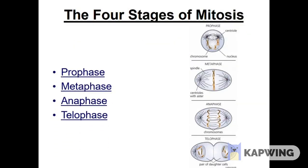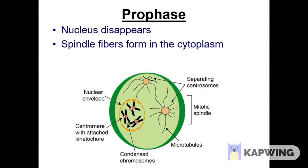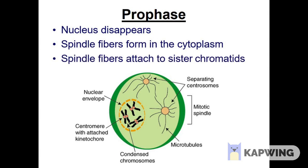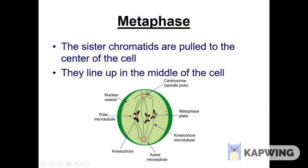Mitosis is majorly divided into four phases: prophase, metaphase, anaphase, and telophase. In prophase, the nuclear envelope disappears and the centrosomes start spreading the spindle fibers. The chromosomes get shortened and form structures called sister chromatids. In metaphase, the chromosomes line up exactly in the middle of the cell, and the spindle fibers attach to the sister chromatids, lining them up along the middle.